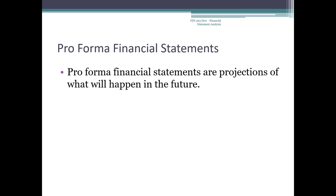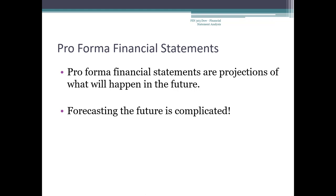Pro-forma financial statements are projections of what will happen in the future. They have the same form as historical financial statements, but the numbers are estimates made by the company. Forecasting the future is complicated, so forecasts will never be perfect, but they should be reasonable and informed estimates of what the company thinks will happen. Potential investors may challenge the forecast, so the company should be able to show how they derive the numbers and be able to defend their assumptions. The assumptions used should clearly be shown as part of the pro-forma financial statements.